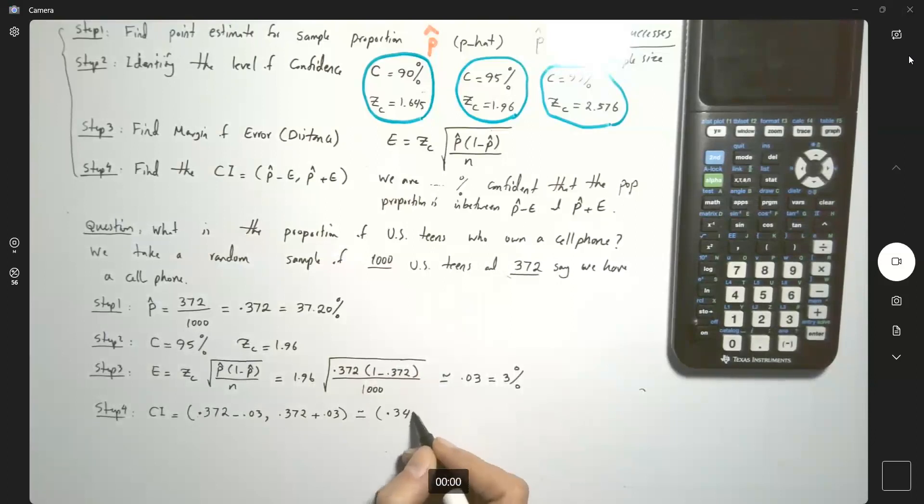So let us do the subtraction, 0.342, and here you have 0.402.